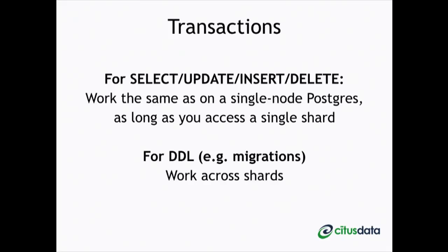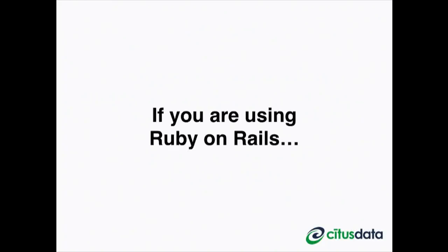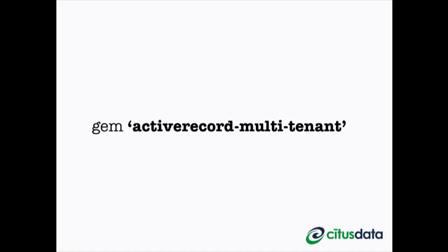We built something called Active Record Multi-Tenant for Rails users. It's essentially a mechanism to help you add a tenant ID and include it in all your queries, so you don't have to change your application or rewrite SQL — it's done for you. You annotate your application by specifying which model belongs to which tenant, and tell your code what tenant you're working with for a given section.